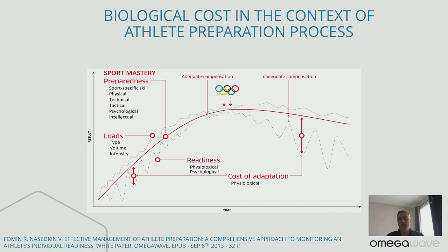Let's start with the red preparedness line. The preparedness curve includes all the components that make athletes who they are. Depending on the sport, physical abilities are not always the most important — for example in soccer or basketball, the most important ability is sport-specific skill, which is part of this preparedness curve. Even with excellent sport-specific skill, you still need to function within a team's tactical scope. Even if you have great individual skill but do not fit into the tactical concept, your contribution to team success will be low — so the tactical component is absolutely crucial for your preparedness curve.